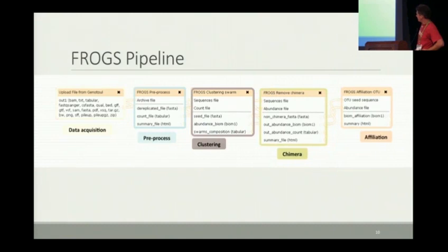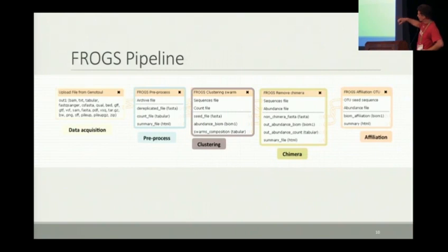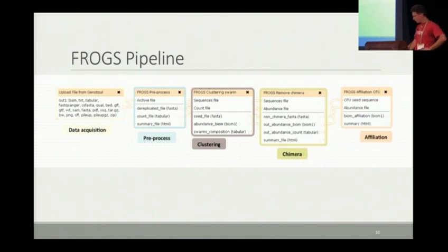The FROGS pipeline is divided as follows: you upload data, you preprocess the data, you make a clustering of the data using algorithms you should consider for metagenomic data clustering. Then there is a step to remove chimera, and finally a last tool for OTU affiliation.